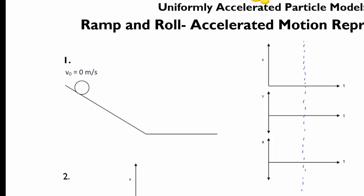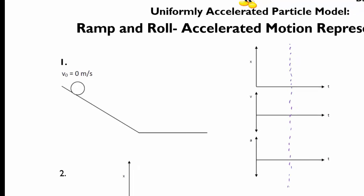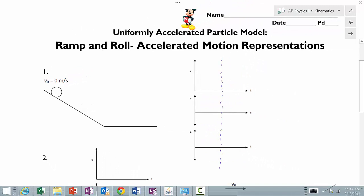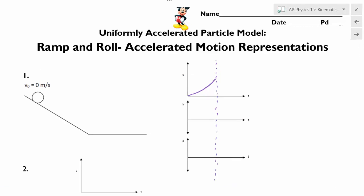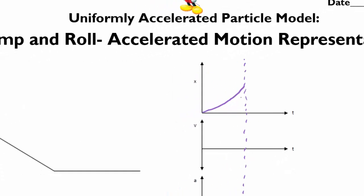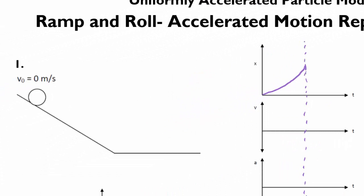For this one here, this is our classic ramp and roll example. As the ball goes down the ramp, its speed increases. It starts from a reference point, so I have an increasing steepness. And then once it hits the bottom of the ramp, I'm just going to draw a line here, it continues at that constant speed that it had when it left the ramp.